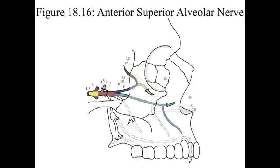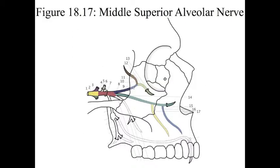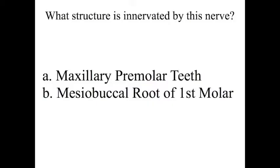Number 16 is the anterior superior alveolar nerve. This nerve is commonly anesthetized for dental treatment. It has two innervations: the maxillary anterior teeth and the nasal cavity. Number 17 is the middle superior alveolar nerve. This also can be anesthetized for dental treatment. It innervates the maxillary premolar teeth and the mesial buccal root of the first maxillary molar.